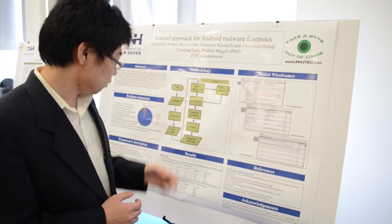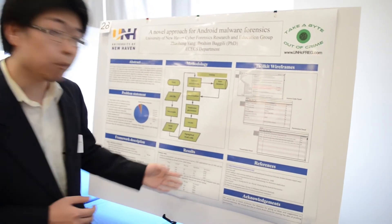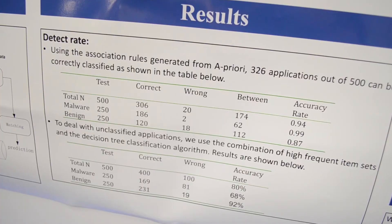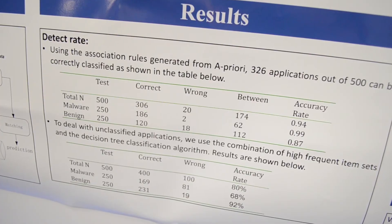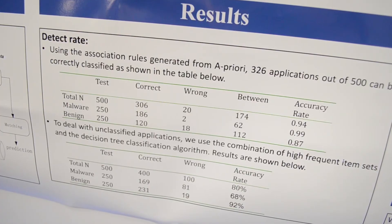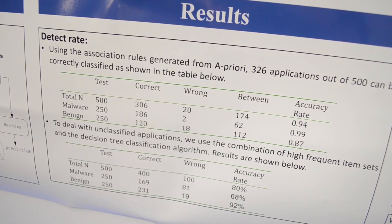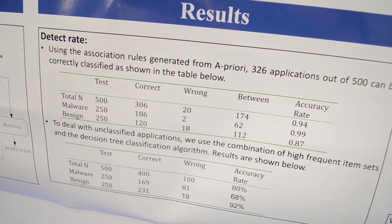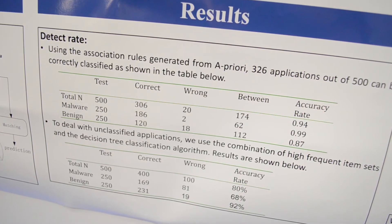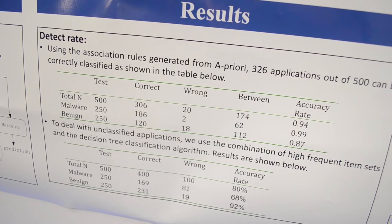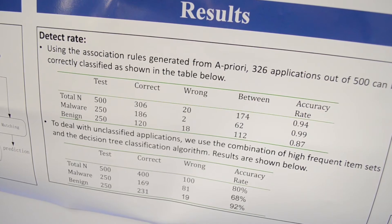If you want to see the output for detected applications, it's pretty good. The overall accuracy is 94%, which means we can detect malware with good accuracy.